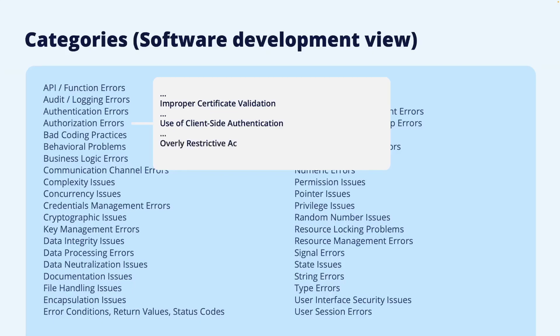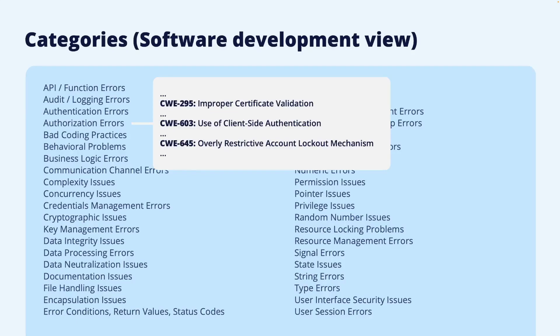A third example is using an overly restrictive account lockout mechanism. It is good practice to make sure that a certain number of failed passwords will lock the account for some time. But if this time is too long, this could create the possibility for an attacker to lock out a legitimate user. All weaknesses also have their unique ID which can be used to refer to them. This is called a CWE identifier. These errors are generally described and hypothetical in the sense that it does not point to a specific software or system that has these errors.